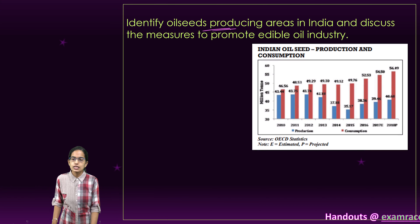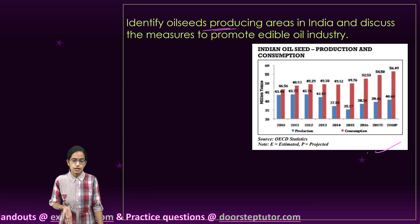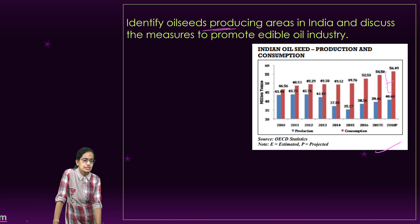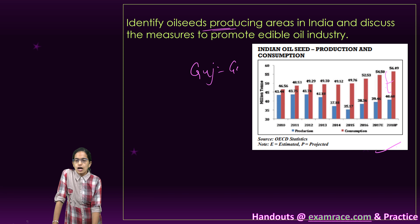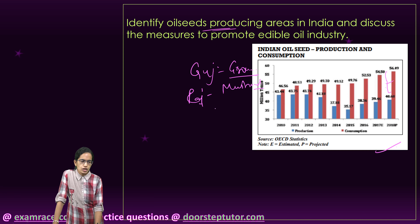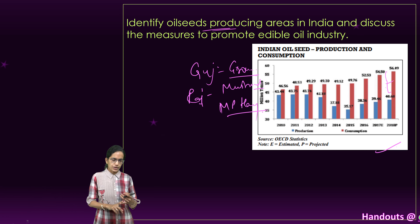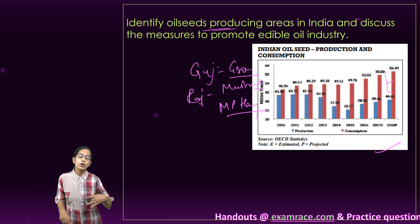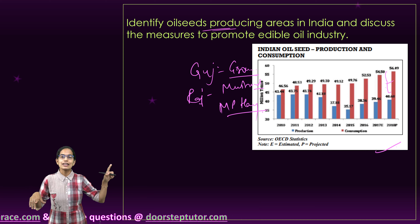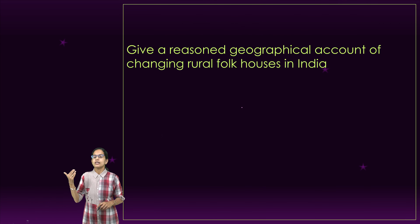The next question: identify oilseed producing areas in India and how to promote the edible oil industry. Our consumption has always been more than production, and this gap is significantly increasing. Gujarat is a major producer of groundnut; Rajasthan leads in mustard and rapeseed; Madhya Pradesh and Haryana also produce good amounts. The goal is to enhance productivity, increase seed production, increase oil content, use low-cost technology, and increase crop yield. The Technology Mission on Oilseeds is one way to promote this.